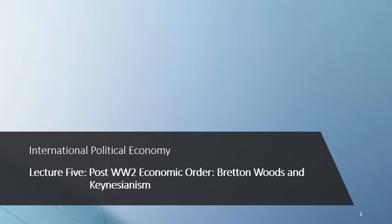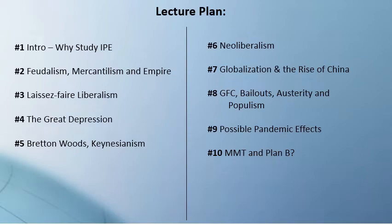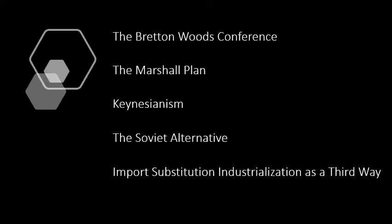Hi everyone. Welcome to lecture five. I hope you're safe and well. Today we're going to look at the post-World War II economic order — the Bretton Woods and Keynesian systems. We're going to cover the Bretton Woods Conference, the Marshall Plan, Keynesianism, the Soviet alternative, and import substitution as a third way.